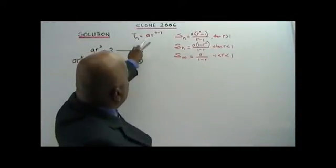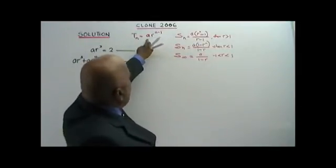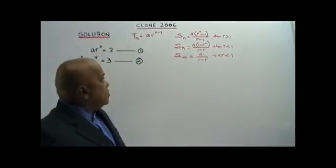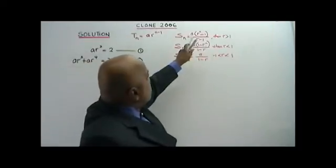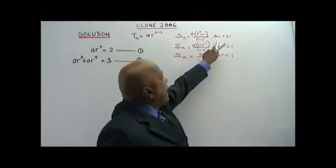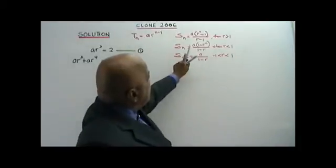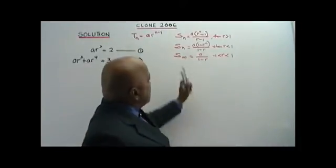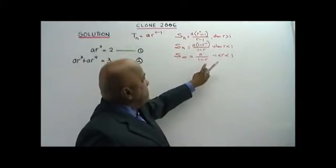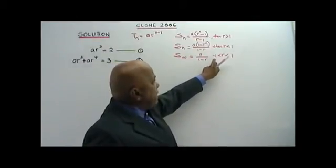TN, the Nth term, equals A times R to the power of N minus 1. A is the first term, R is the common ratio. SN equals A times R to the power of N minus 1, over R minus 1, when R is more than 1. When R is less than 1, we apply the other formula. And this formula is applied for sum to infinity: A over 1 minus R, where R is more than negative 1 but less than 1.